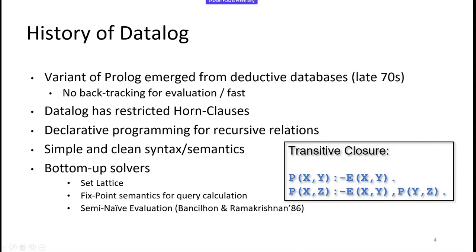Simple things like a transitive closure can be expressed in just two lines. The first line says a path X,Y exists if there is an edge X,Y. Then you have the transitivity: there is a path X,Z if there is an edge X,Y and a path Y,Z. With just two lines, you can express something that in Python or Go would need quite a bit of code to express this fixed-point semantics, plus even more code for efficient indices and fast lookups.